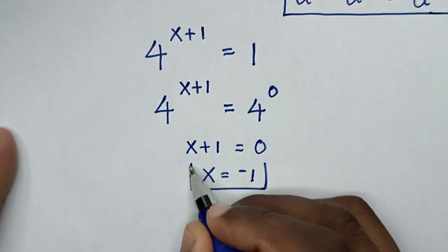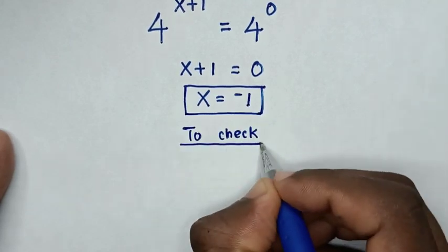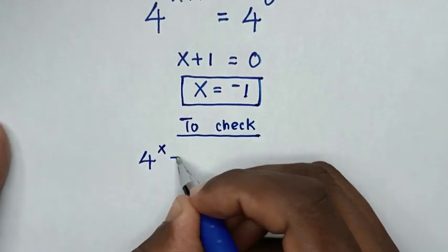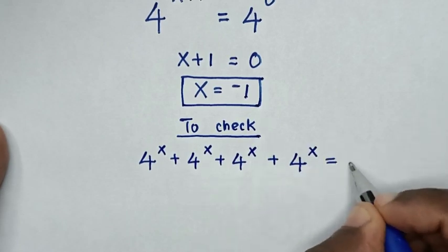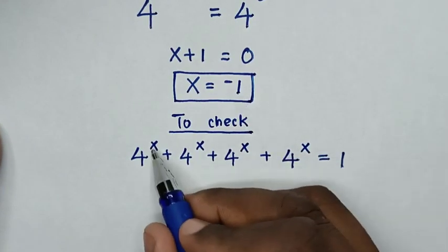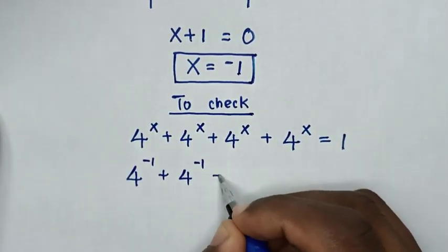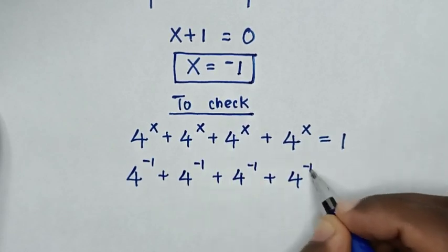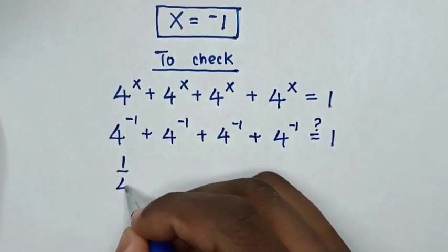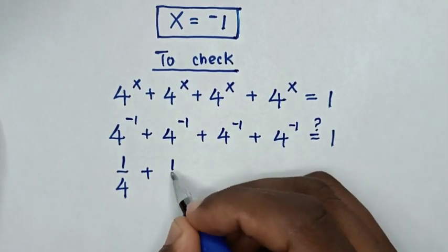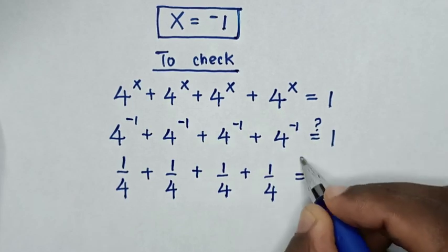That is the value of x from this problem. Now to check if the value of x is correct: from our problem, 4 power x plus 4 power x plus 4 power x plus 4 power x is equal to 1. We substitute x equals negative 1, giving 4 power negative 1 plus 4 power negative 1 plus 4 power negative 1 plus 4 power negative 1 is equal to 1. Since 4 power negative 1 equals 1 over 4, this becomes 1/4 plus 1/4 plus 1/4 plus 1/4.